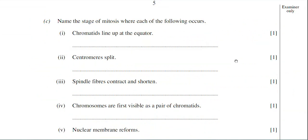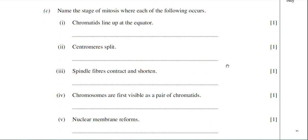Part C: you have to name the stage of mitosis where each of the following occurs. You do have to remember what events occur in each stage of mitosis and be able to recognise the stages from diagrams and microscope images. The first one: chromatids line up at the equator. That would be metaphase. Remember that the chromosomes or chromatids always align along the equator during metaphase. M begins metaphase and M begins middle. So metaphase, middle of the cell.